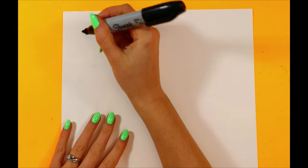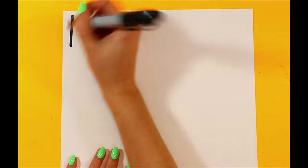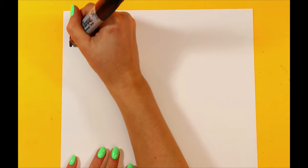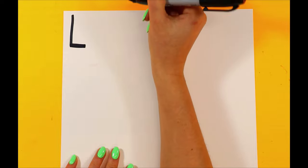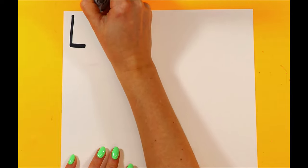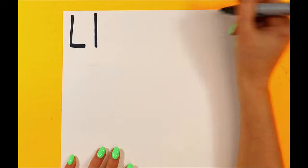All right, we're going to draw a ladybug. Let's begin by writing the letter L. We're going to begin with the uppercase letter L, so one line down and a line across at the bottom. And then a lowercase letter L is just one line down.